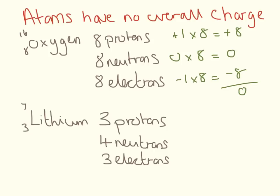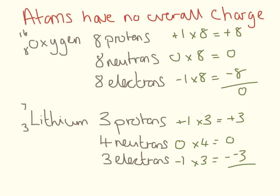Lithium has 3 protons, 4 neutrons, and 3 electrons, worked out using the mass number and atomic number. Protons have a plus 1 charge and there are three of them, so that's plus 3. Neutrons have a neutral charge and there are four, so that's zero. Electrons have a minus 1 charge and there are three, so that's minus 3. Plus 3, zero, and minus 3 overall make zero.